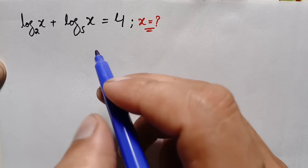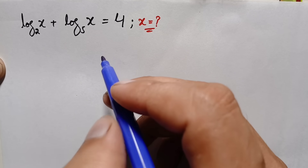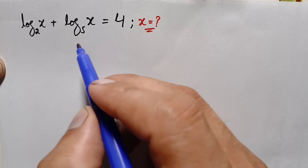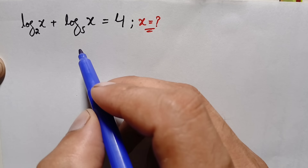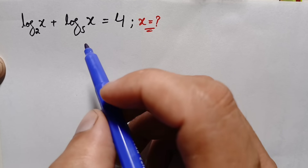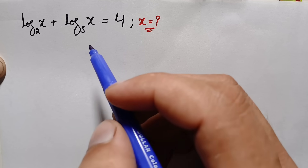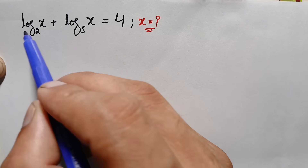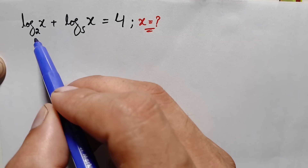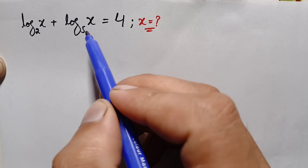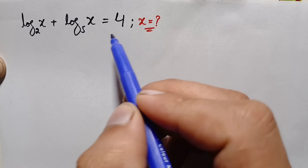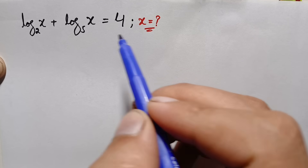Hello everyone, you are welcome. How to solve this beautiful logarithm math problem with different bases: log of x with base 2 plus log of x with base 5 is equal to 4.